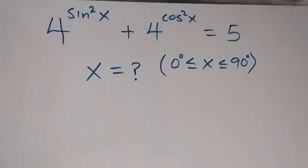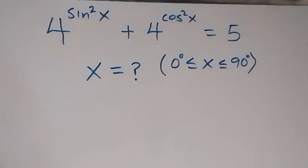Hello, you are welcome. How to solve this nice trigonometry problem: we have 4 raised to the power sine squared x plus 4 raised to the power cosine squared x equals 5, where x is between 0 degrees and 90 degrees.